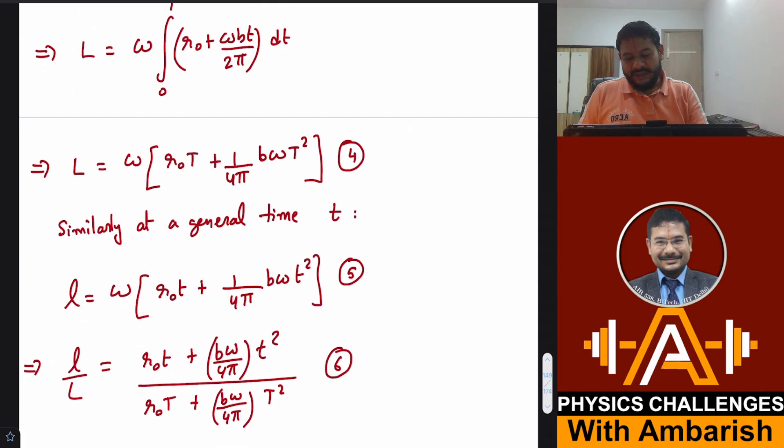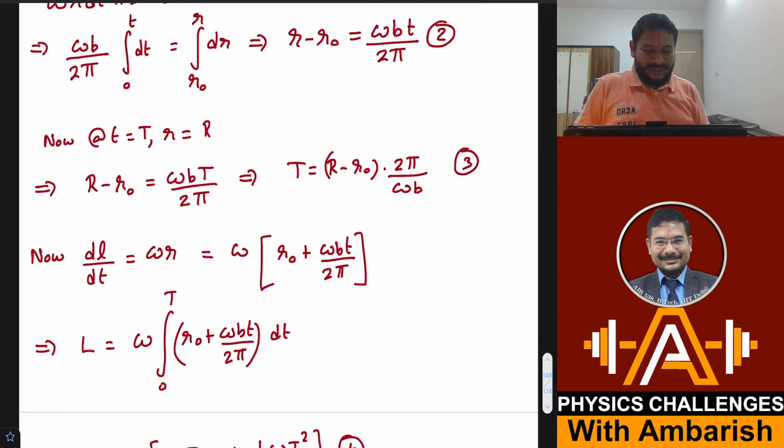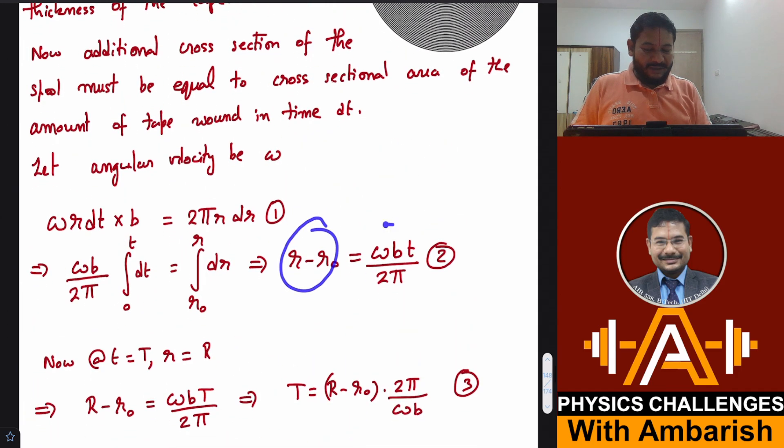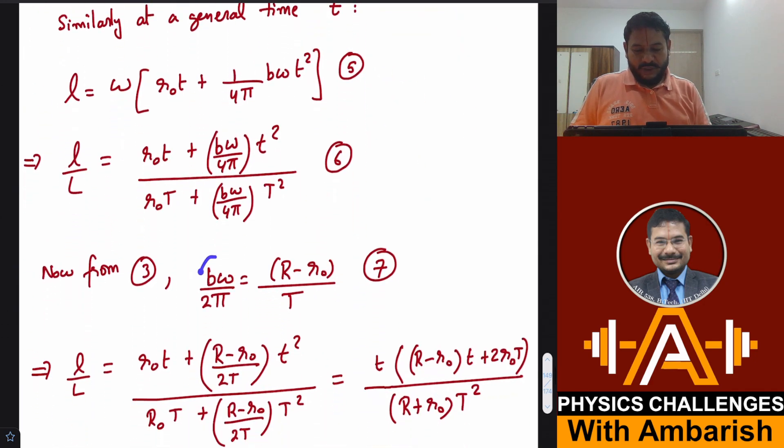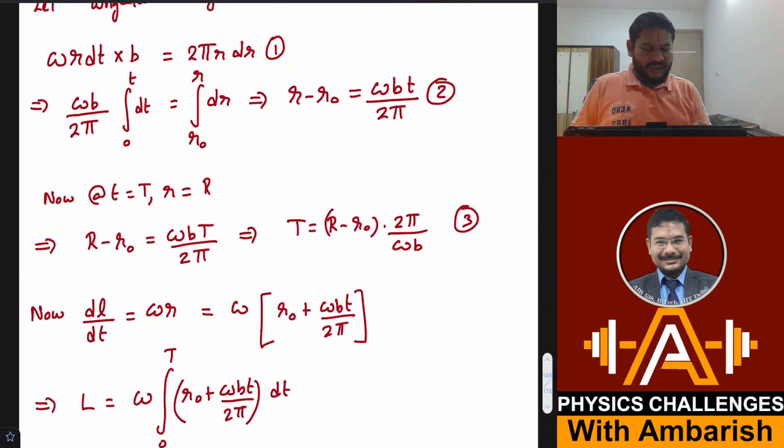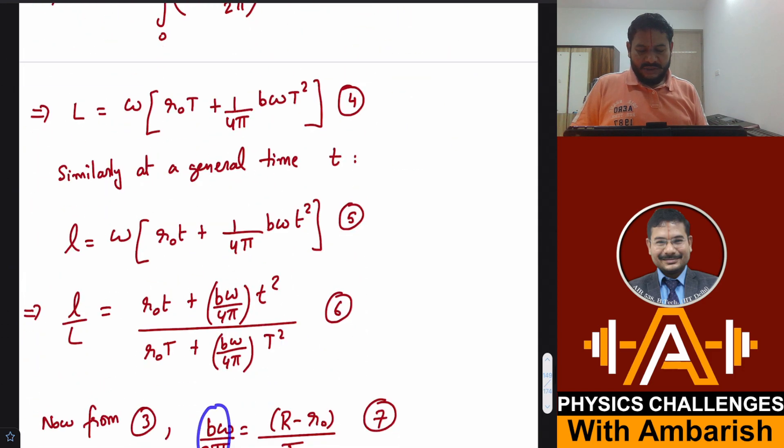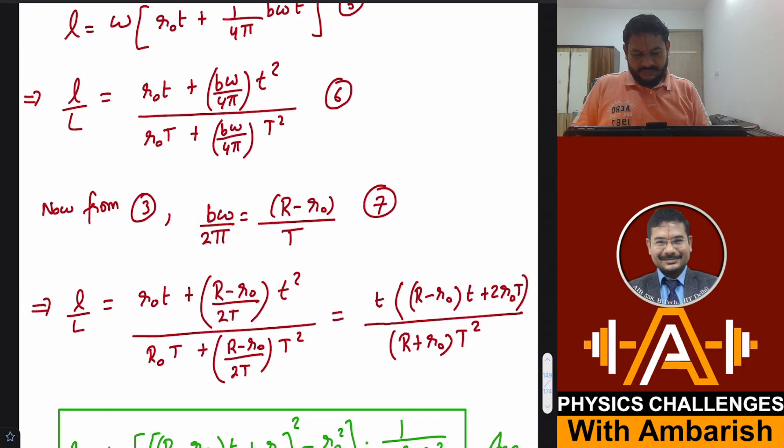Now what you can do, you divide the two so that you eliminate omega because omega is not given. You divide the two and still you have b omega upon 4π here. You don't know b and you don't know omega but don't worry. We found that R minus r0 is omega bT upon 2π. So omega b by 2π can be substituted as it is. From here you can get b omega upon 2π is R minus r0 by T. So you just put that there, b omega by 2π is R minus r0 over capital T.